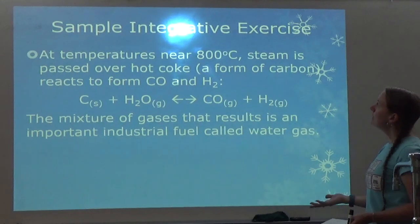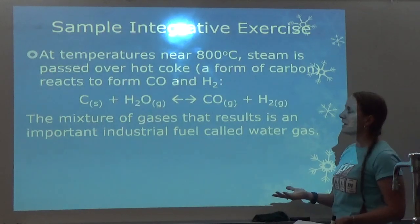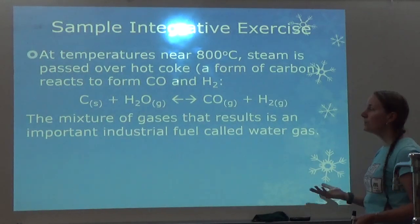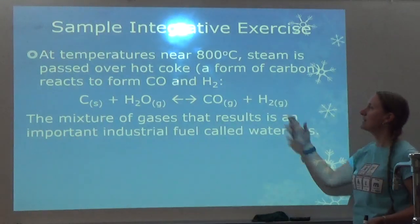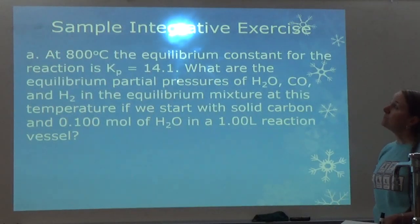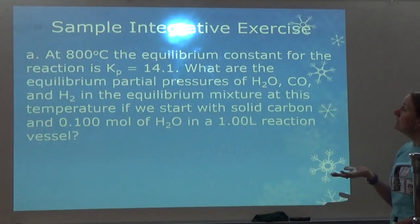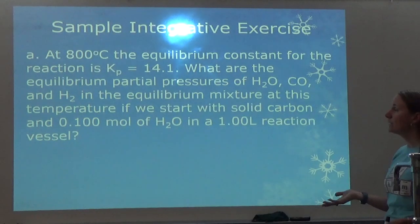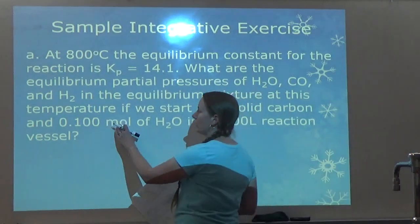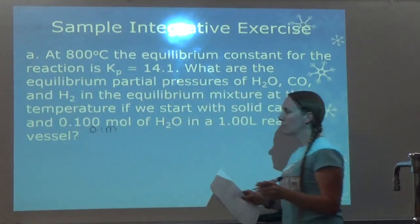Sample integrative exercise: at temperatures near 800°C, steam is passed over hot coke — a form of carbon — and reacts to form carbon monoxide and hydrogen gas, an industrial fuel called water gas. We have solid carbon and gaseous water making gaseous CO and H2. At 800°C, the equilibrium constant KP is 14.1. What are the equilibrium partial pressures of water, CO, and H2 if we start with solid carbon and 0.1 moles of H2O in a 1-liter reaction vessel? Since it's 0.1 moles in 1 liter, that's 0.1 molarity — but they gave me KP, so I need pressure, not molarity.